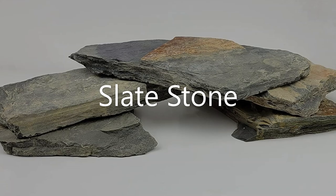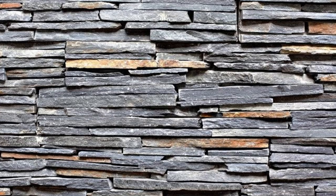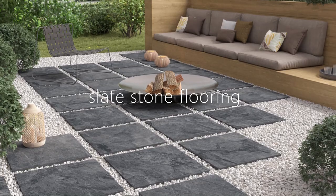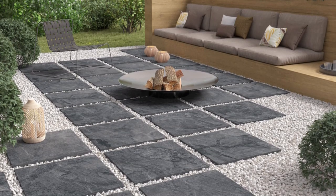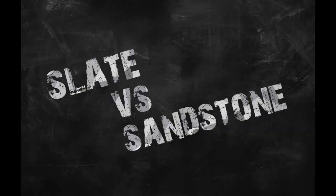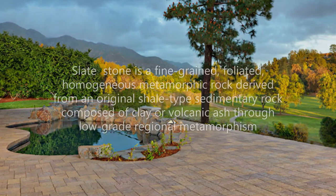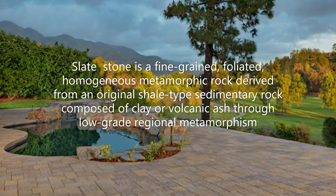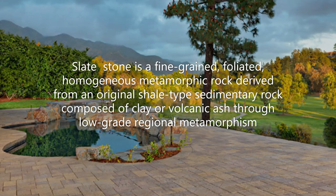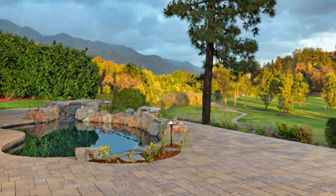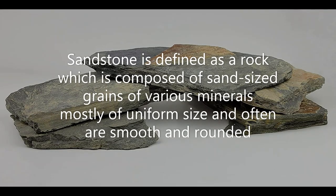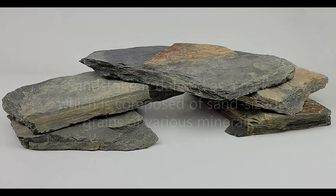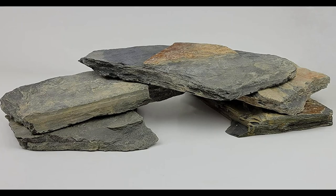Now we are talking about slate stone. A common question is: are slate and sandstone the same? Slate stone is a fine-grained, foliated, homogeneous metamorphic rock derived from an original shale-type sedimentary rock, composed of clay or volcanic ash through low-grade regional metamorphism. Sandstone is defined as a rock composed of sand-sized grains of various minerals, mostly of uniform size and often smooth and rounded.